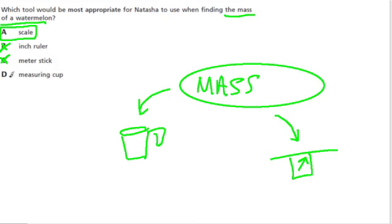And the measuring cup could also find volume. And if we knew density, you can find mass. But really, the scale is the most straightforward.